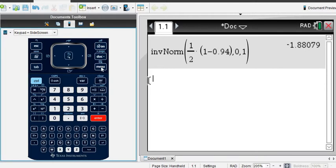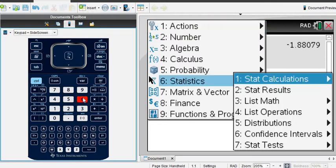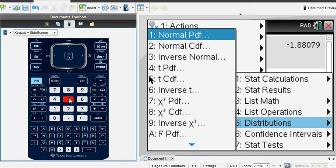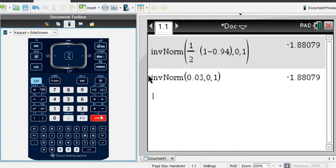Or to go through that again, we could have gone to menu, option 5. You could also go to option 6 statistics. It's underneath there, too. The distributions, and then option 3, the inverse norm, and you can type in 0.03 instead of the 1/2(1 minus C). And notice we get the same thing. So either way allows you to get the same answer.